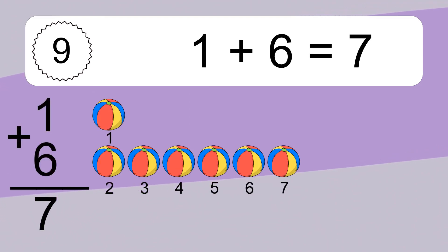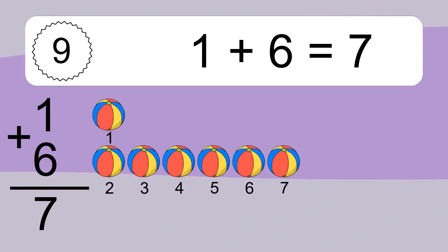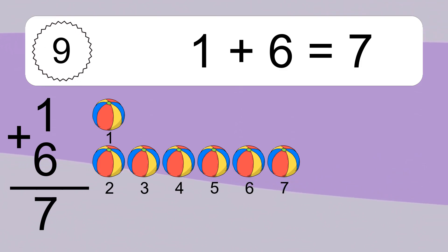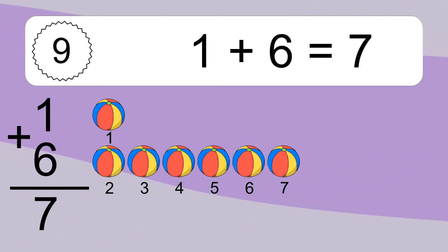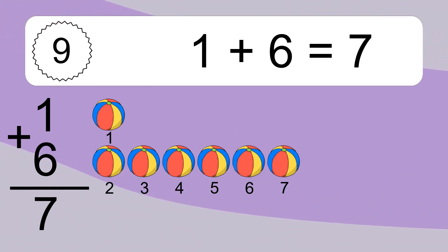1 plus 6 equals 7. Let's count it. 1, 2, 3, 4, 5, 6, 7.